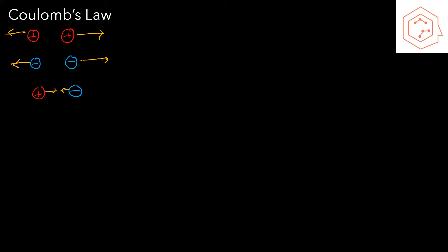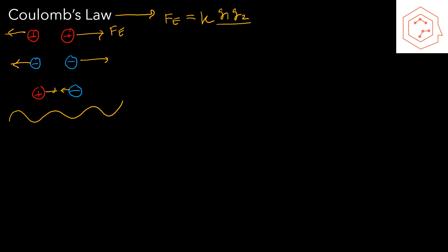The force creating this movement is known as the electric force. From the diagram we can determine the direction of the electric force based on the interaction occurring, and the magnitude is given by Coulomb's Law, which can be expressed as Fe = k·q1·q2 divided by r².